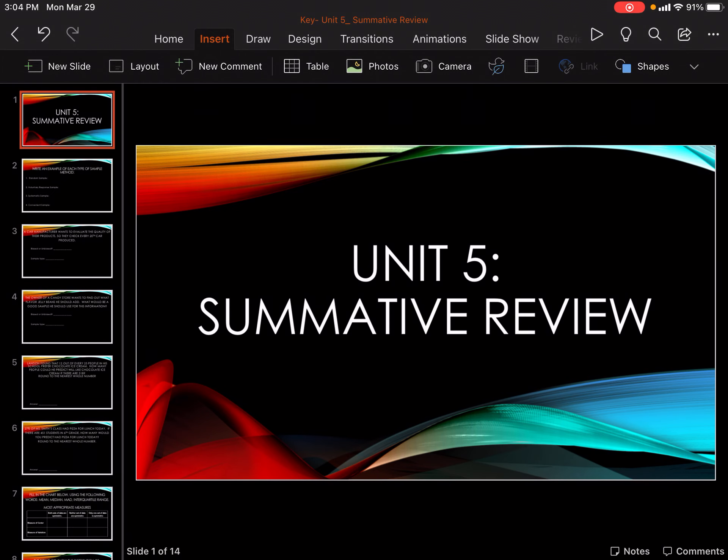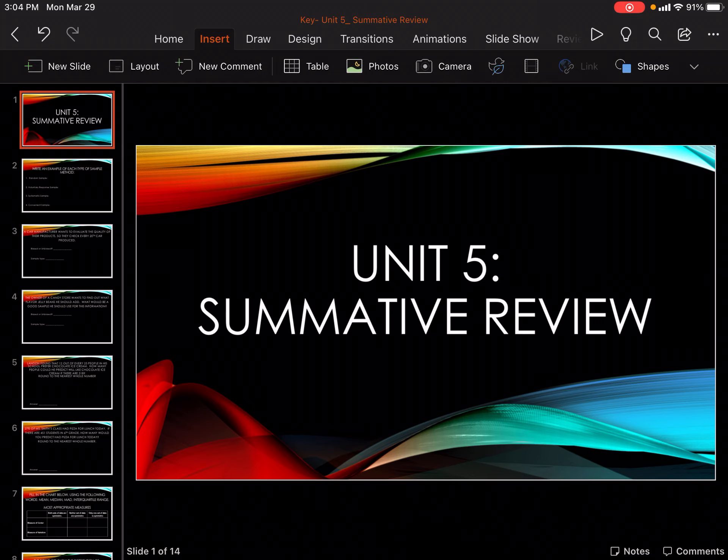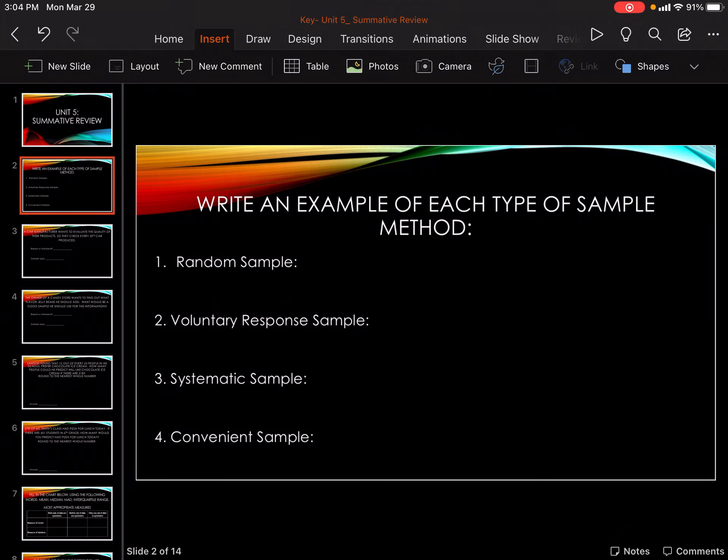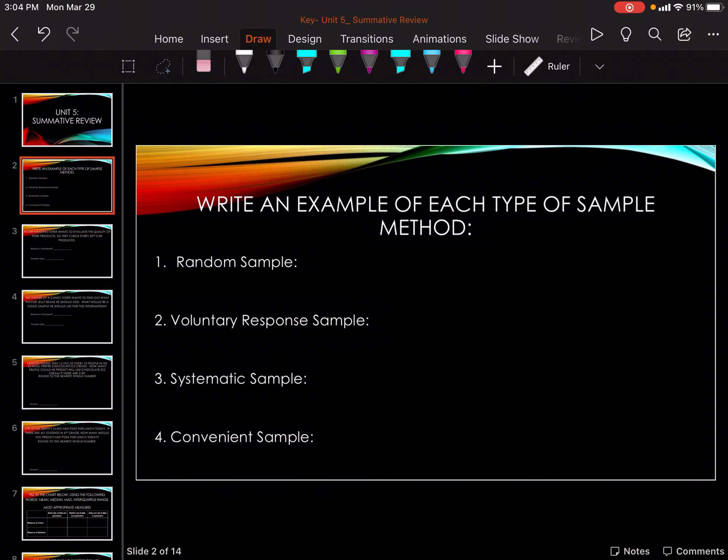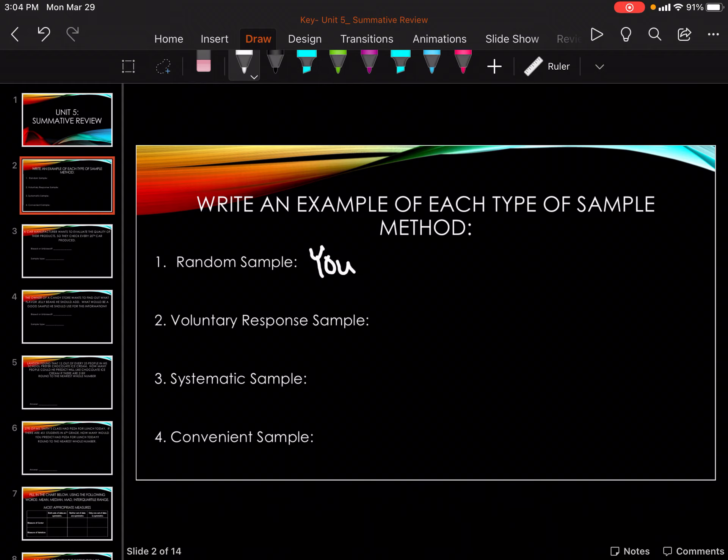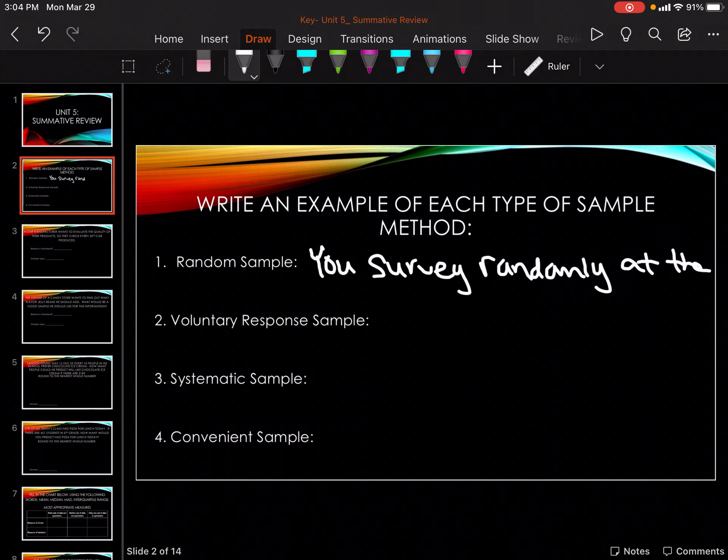Hey guys, in this video we're going to go through the inferences summative review. For this I'm going to give you my example for each type. Yours obviously may be a little different and that's okay. So for random sample, you survey randomly at the grocery store about favorite color.